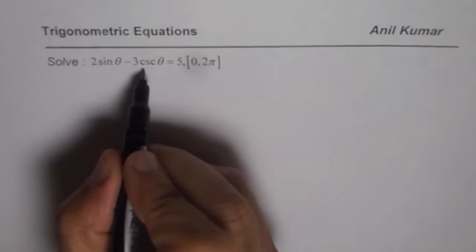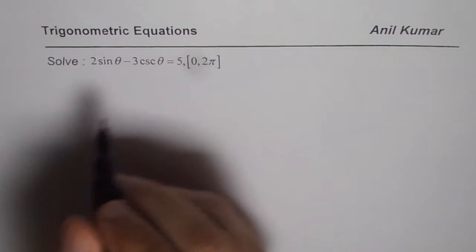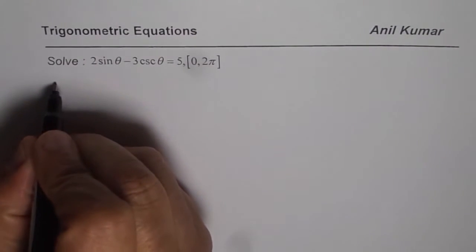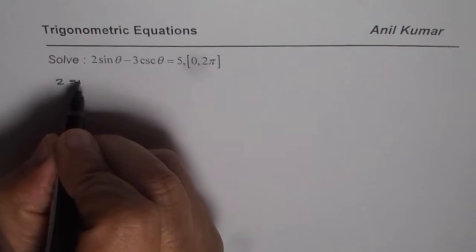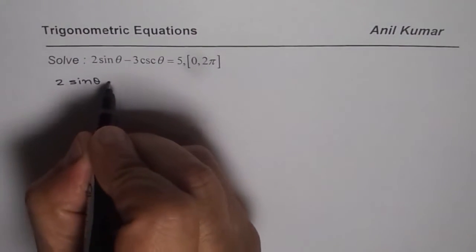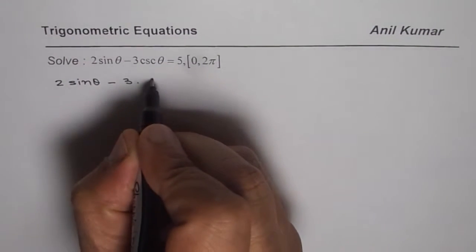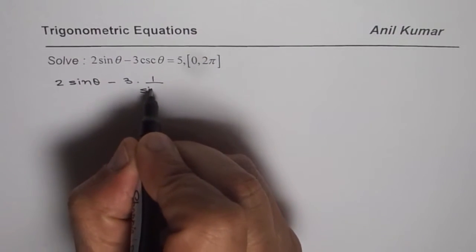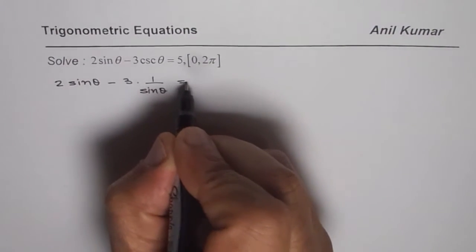So let us write cosecant as 1 over sin. So we can write this equation as 2 sin theta minus 3 times 1 over sin theta, that is cosecant theta equals to 5.